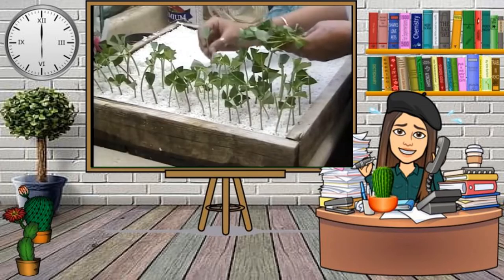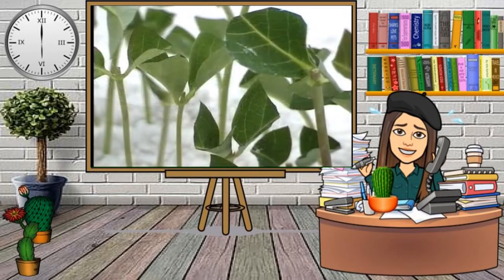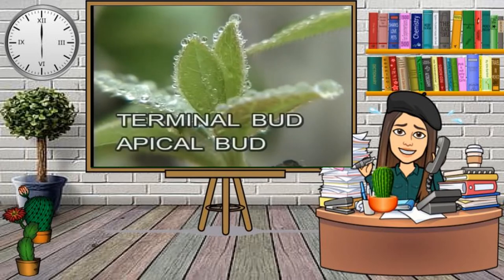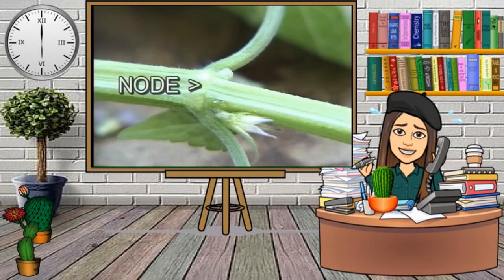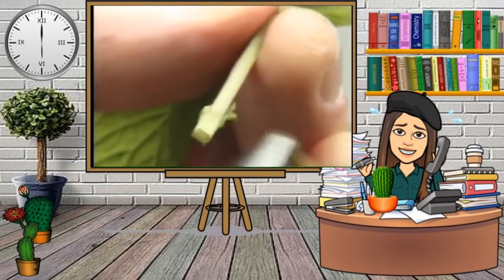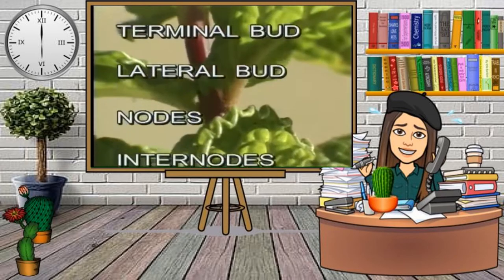Now let's look at the anatomy of a cutting. Most cuttings we take will be stem cuttings. A basic stem cutting consists of a length of stem, leaves, a terminal bud also called the apical bud, lateral or side buds, and nodes. Nodes are the joints of the stem where leaves and side buds are attached. Leaves and buds are usually removed from the bottom nodes of the cutting. The bare segments of stem between nodes are called internodes.